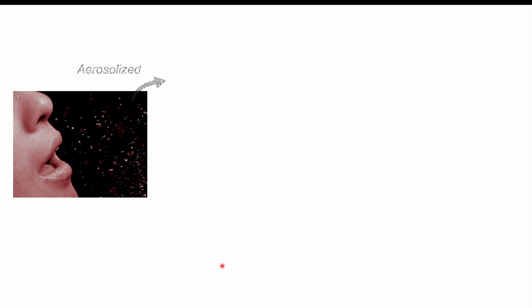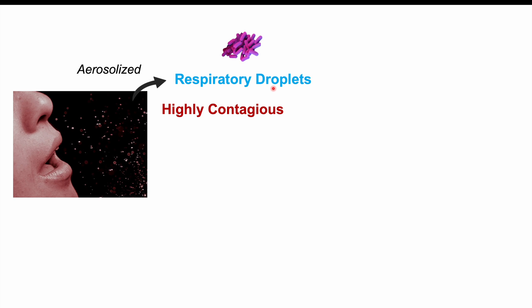When patients with whooping cough cough, they cough excessively — there are paroxysms of coughing, severe episodes. When the patient coughs, they cough out the bacteria and it becomes aerosolized, entering the environment in respiratory droplets. It can end up in the air or land on surfaces. It's a highly contagious bacteria; it's estimated that 80 to 90% of individuals exposed to the bacteria develop the condition.